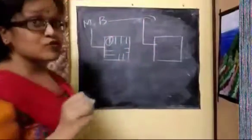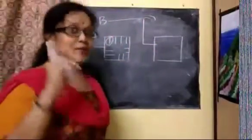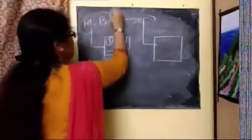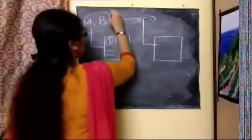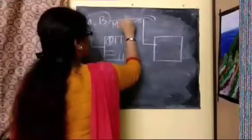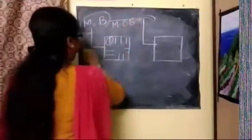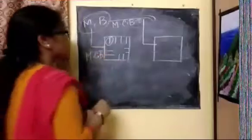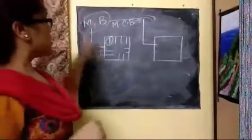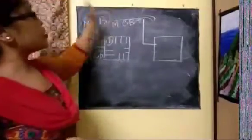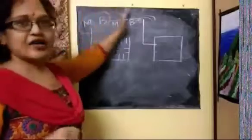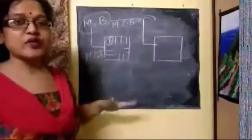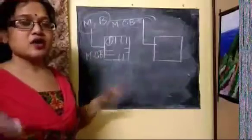Two rooms have parallel connection from the meter box or distribution box. Each MCB is in parallel connection. But before the meter box, all connections are in series — meaning if one breaks, others will always be cut down.